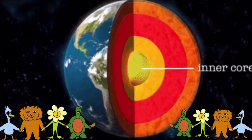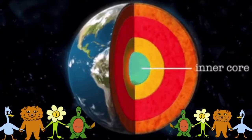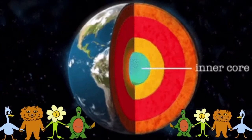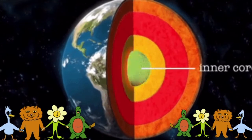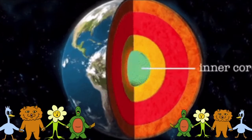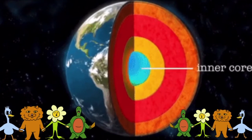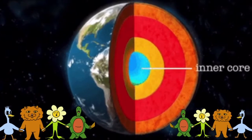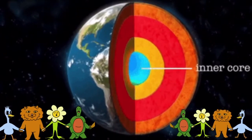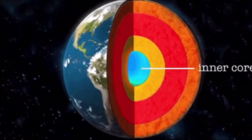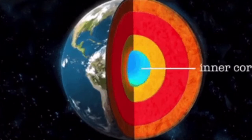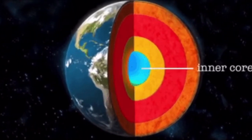Layers, layers like a cake. The earth has layers, it's no mistake. First the crust, hard hard stone. The mantle's next, a very hot zone. The outer core, then one more. The hottest part, the inner core. Layers, layers, yes there are four. From the crust to the core.